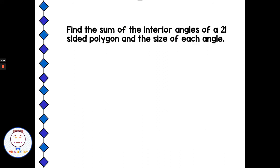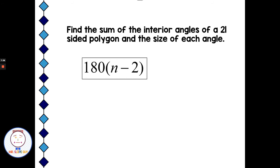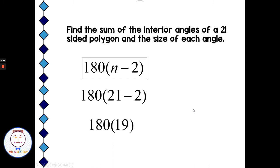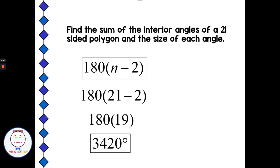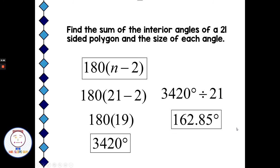Find the sum of the interior angles of a 21-sided regular polygon and the size of each angle. Using 180 times (n minus 2), we replace n with 21. Twenty-one minus 2 is 19, and 180 times 19 gives us 3420 degrees. Since it's a regular polygon, we can find each angle by dividing 3420 by 21, and each angle is 162.85 degrees.